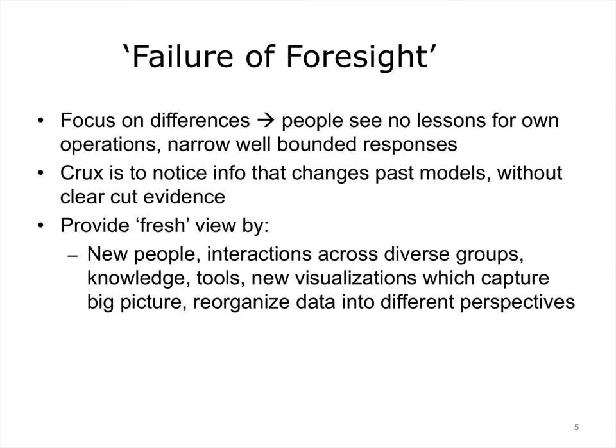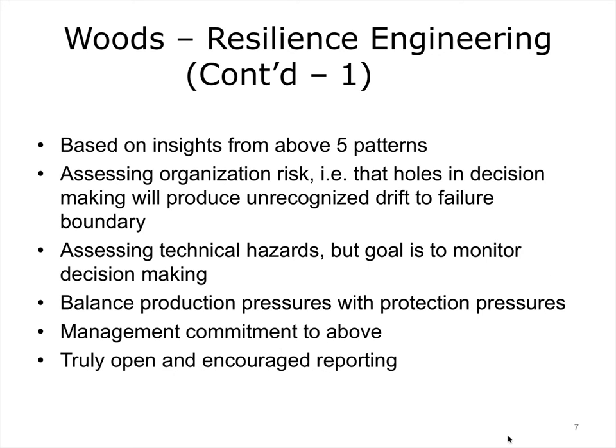New people, interactions, knowledge, tools, and visualizations which capture the big picture and allow reorganization of data into different perspectives can all assist in formulating a truer picture of what is happening and how it may result in unsafe conditions. In order to avoid the kind of failure of foresight involved in the Challenger disaster, Woods and others recommend building processes in which people cross-check each other's work and using different methods which can serve as cross-checks and detect possible abnormalities.